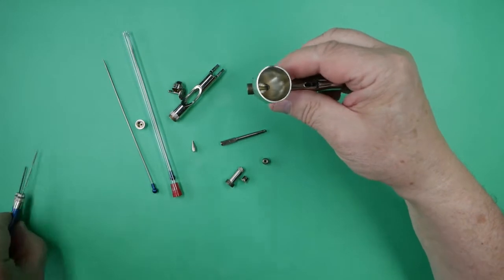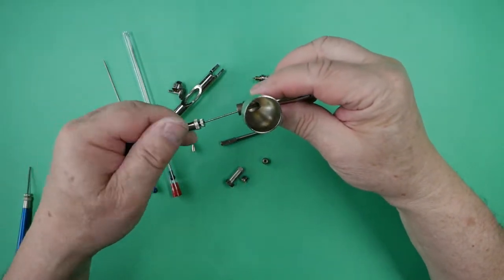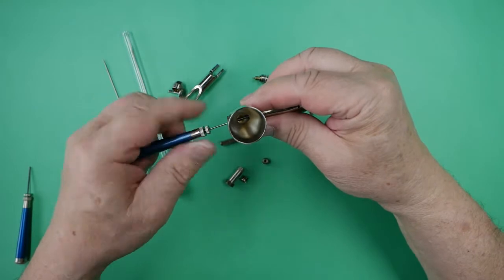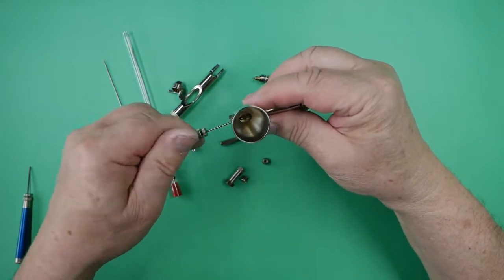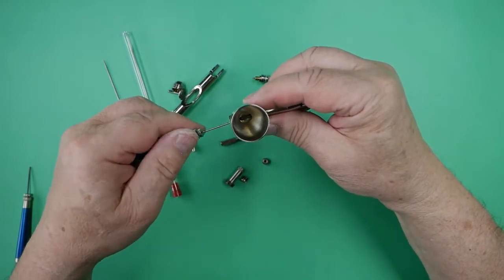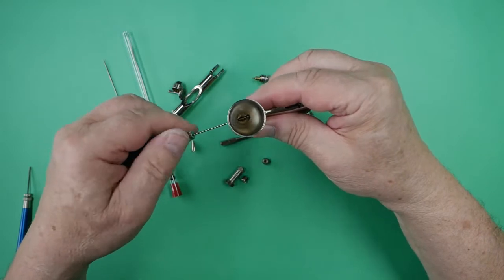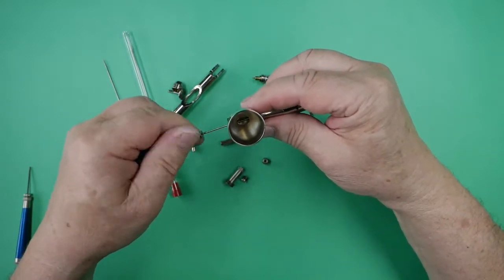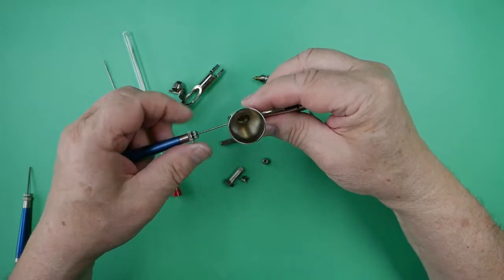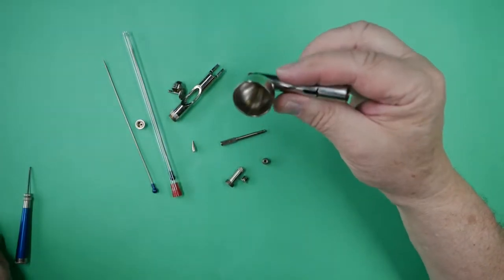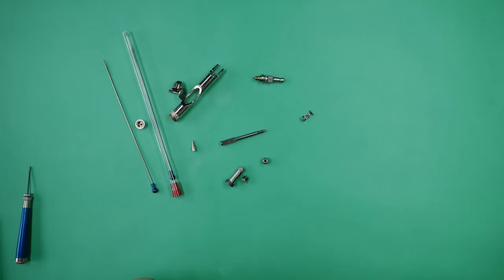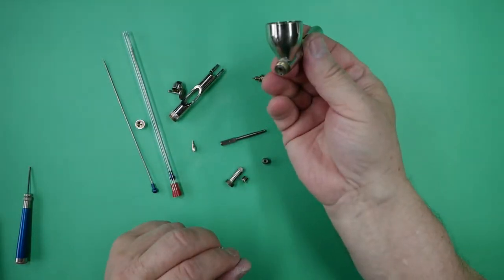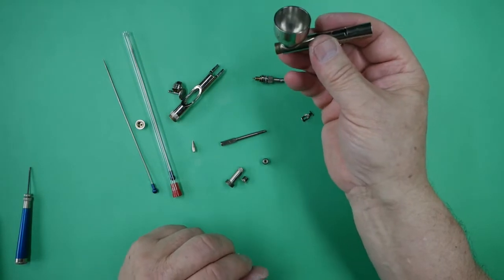I will then ream it out to make sure we haven't done any damage and the hole is the correct size. And just off camera I will blow through the airbrush just to remove any debris that the reaming has caused.